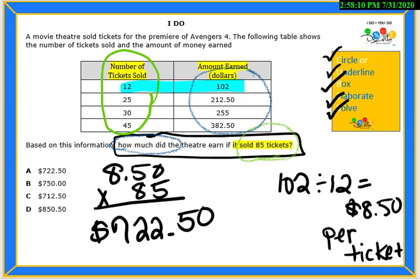Our answer choice is A. We are now done solving the I Do problem. At this time, you can move down to the You Do problem and use the CUBES strategy to solve.